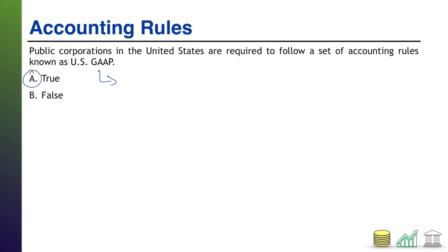U.S. GAAP stands for United States Generally Accepted Accounting Principles. In other countries, you might have their own version of local GAAP — their local generally accepted accounting principles. And many countries follow international accounting principles known as IFRS. But in the U.S., we follow U.S. GAAP.